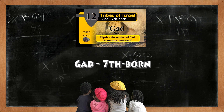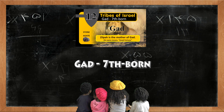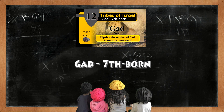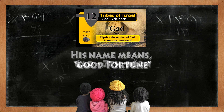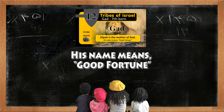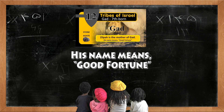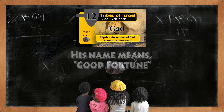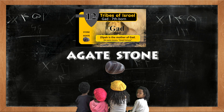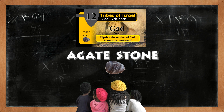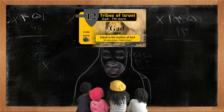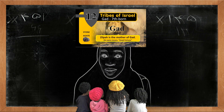Gad is the seventhborn son. His name means Good Fortune. The agate stone represents the tribe of Gad. Zilpah is the mother of Gad.